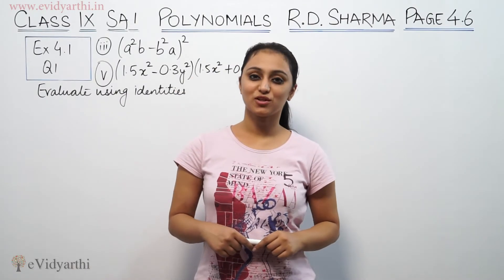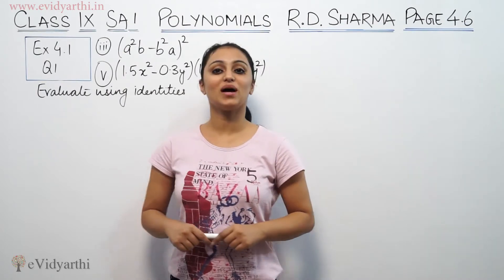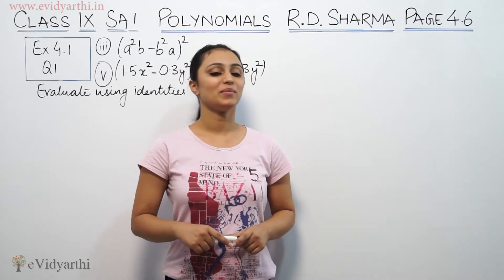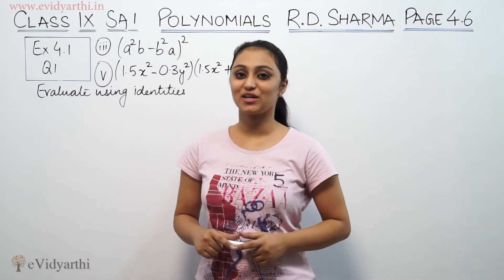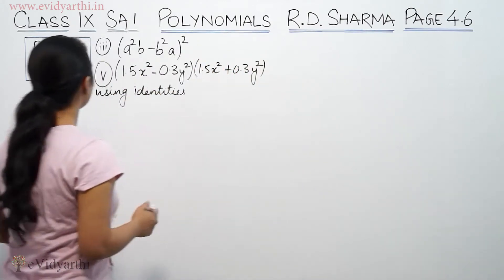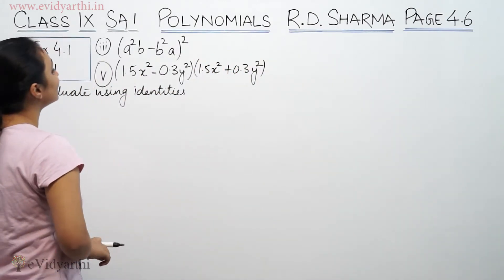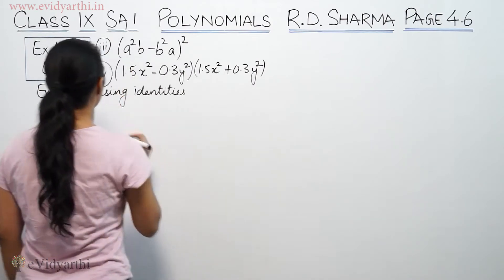Hi, this is Khuj Poo with another question on polynomials. This is question number 1 from exercise 4.1, page 4.6 from R.D. Sharma. It says evaluate using identities. Part (iii) is (a²b - b²a)².